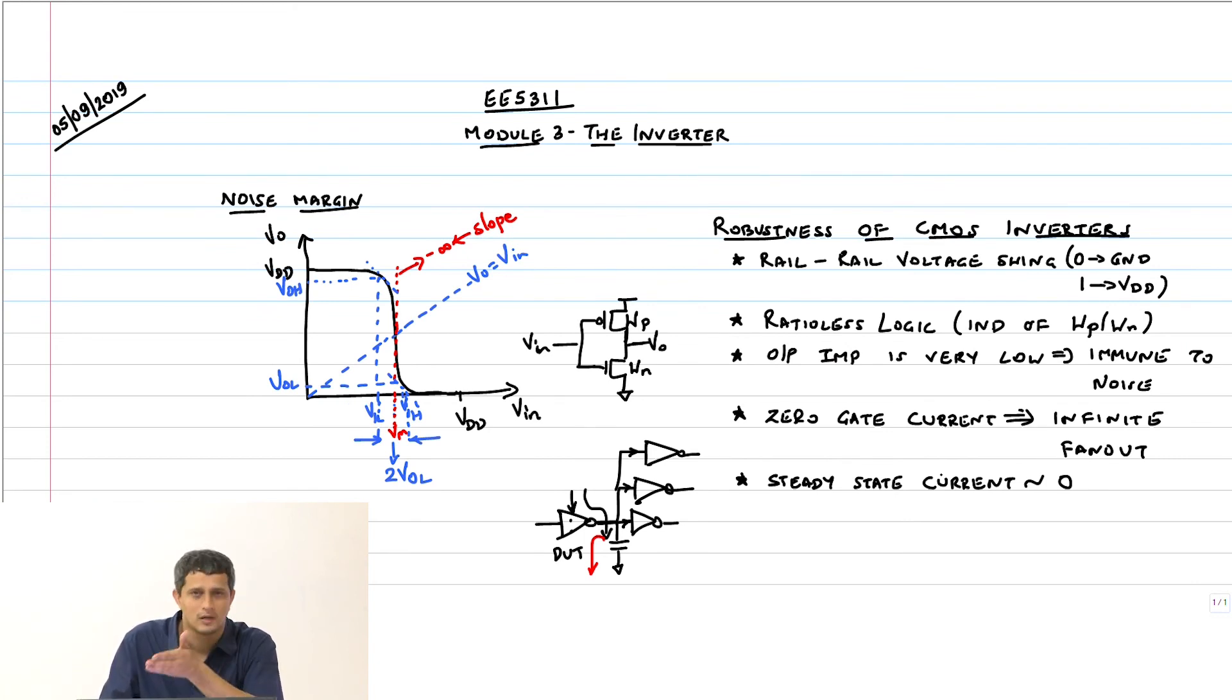This current is actually leakage. Only now it has started to show up significantly, maybe the last 2-3 generations leakage current has started to show up significantly, but for a long time this leakage current was really negligible.